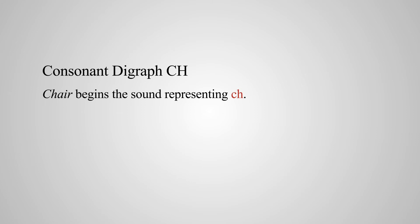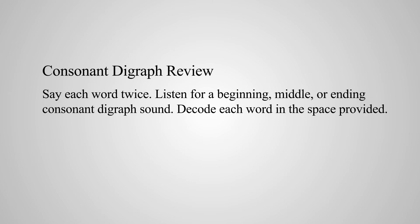You can pause, and when you're ready we'll go to page 50, which is the consonant digraph review. Say each word twice, listen for a beginning, middle, or ending consonant digraph sound, and decode each word in the space provided. For example, number one is shade — you will underline SH, the A will be long, and the E will be silent. Number two, the digraph is WH, the A will be long, and the E will be silent — to sound it out you would say A-L, well. Always start with the first vowel in a word to sound it out. Go ahead and practice page 50 and then we'll get on to lesson 11.